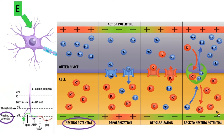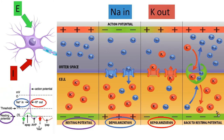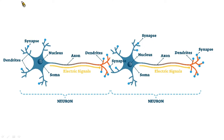Initially, a neuron is in the resting potential. When an exciting signal enters the neuron, the sodium ion moves into the cell and an action potential appears. This stage we call depolarization. Then potassium ions move out of the cell — this stage we call the repolarization stage.